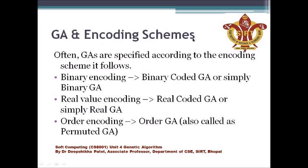When we specify a genetic algorithm, the representation depends on which encoding scheme we are using. For example, in previous lectures we used binary encoding — that is the implementation of a simple genetic algorithm. If you are using binary encoding, the algorithm is known as binary coded GA or simply binary GA.